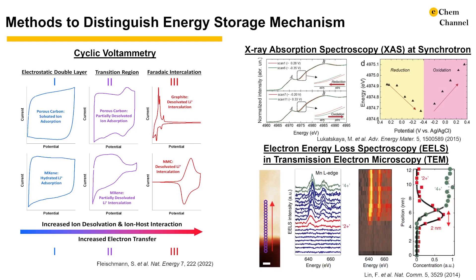To provide additional information, researchers typically use operando or in-situ characterization techniques that can distinguish oxidation state changes, such as synchrotron-based X-ray absorption spectroscopy and electron energy loss spectroscopy in a transmission electron microscope. As mentioned, they can be hard to access and require high expertise in data collection and analysis.